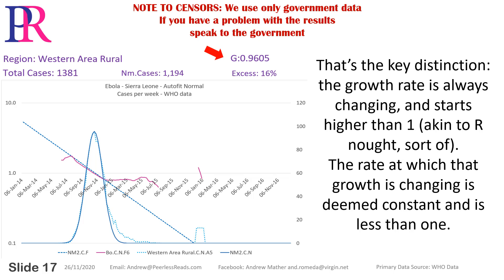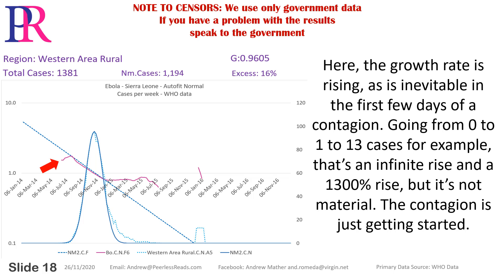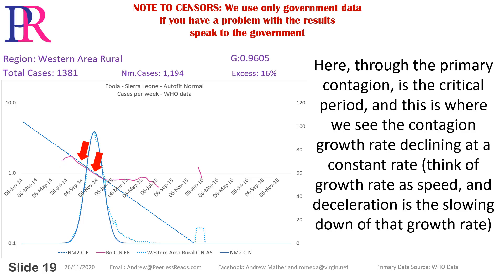The growth rate is always changing and starts higher than one, akin to R-naught, sort of. The rate at which that growth is changing is deemed constant and is less than one. Here the growth rate is rising, as is inevitable in the first few days of contagion, going from zero to one to thirteen cases — that's an infinite rise and a thirteen hundred percent rise. But it's not material; the contagion is just getting started. Here, through the primary contagion, is the critical period, and this is where we see the contagion growth rate declining at a constant rate.